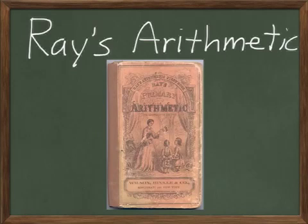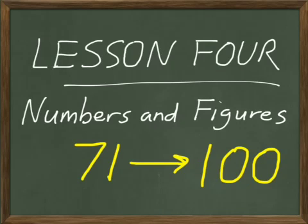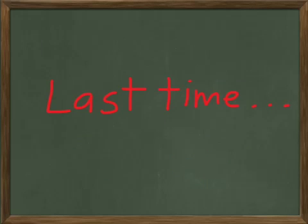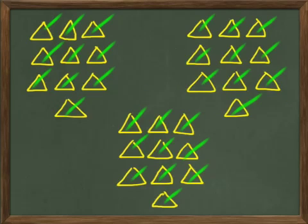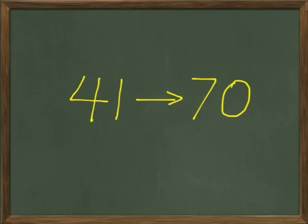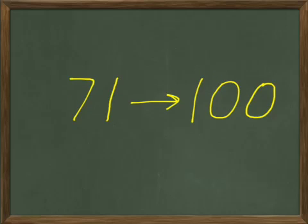Today's lesson in Ray's Arithmetic is Lesson 4, and this wraps up our section on numbers and figures where we finish our counting through 100. Today we're going to pick it up at 71 and count all the way through 100. If you remember from last time, we counted triangles from 41 through 70. Today we're going to do the same thing for 71 through 100, and that'll get us done with our counting part.